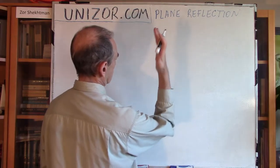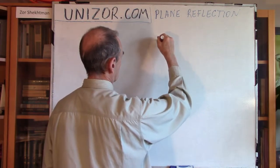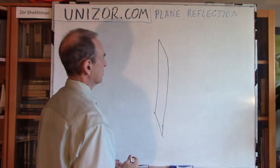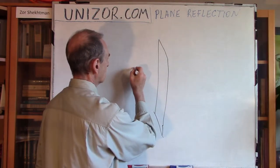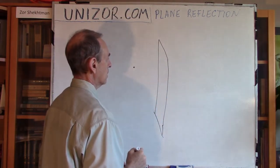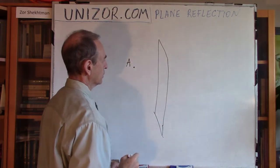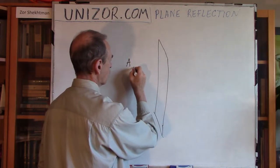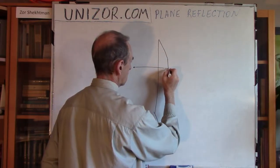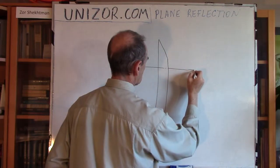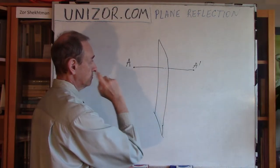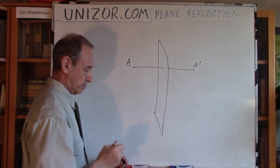For instance, it's vertical, like this one. This is the plane. Now, if I would like to construct an image relative to this plane — the image of this point A — I have to first drop a perpendicular to the plane and then continue it the same distance to get A prime. So, perpendicular to the plane and extend it by the same length. Let's call the foot of the perpendicular point P.